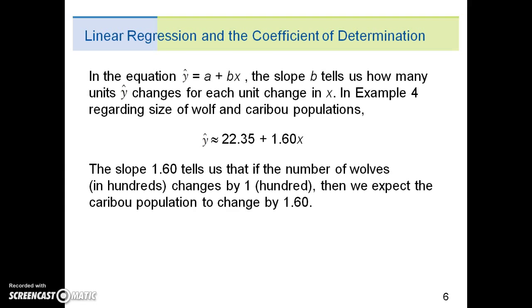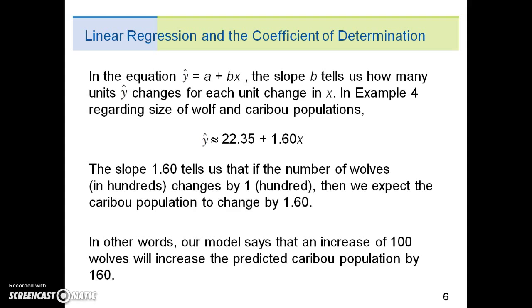The slope 1.60 tells us that if the number of wolves in hundreds changes by 1 hundred, then we expect the caribou population to change by 1.6. In other words, our model says that an increase of 100 wolves will increase the predicted caribou population by 160.